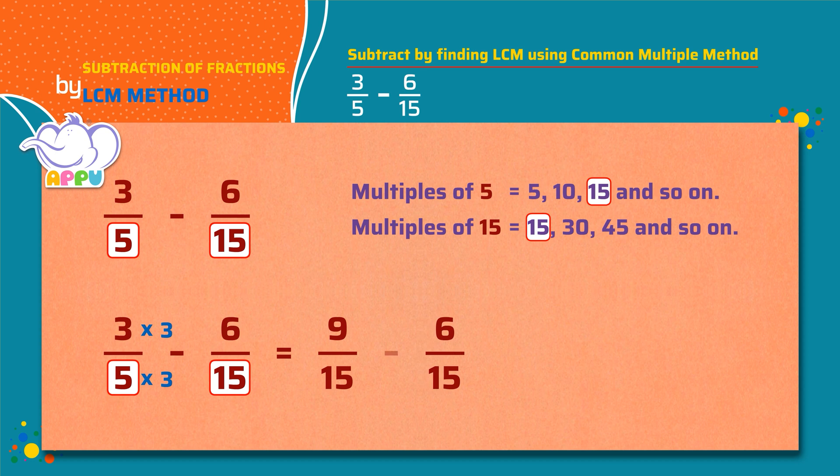Now the denominators are the same for both the fractions. That is 15. We write the denominator as 15. And we subtract the numerators. 9 minus 6 equals 3. The answer is 3 by 15.